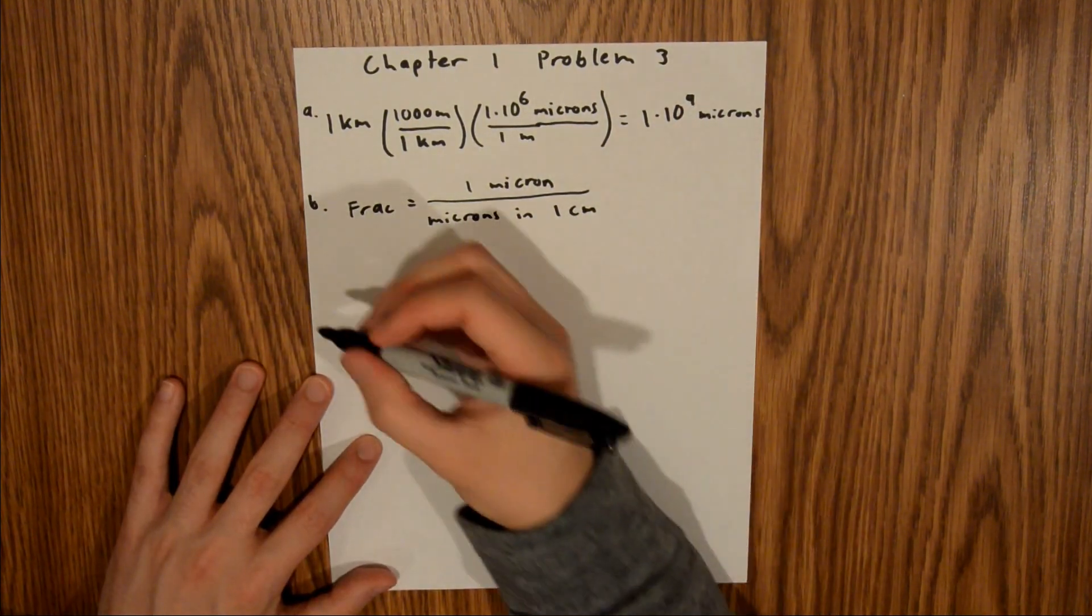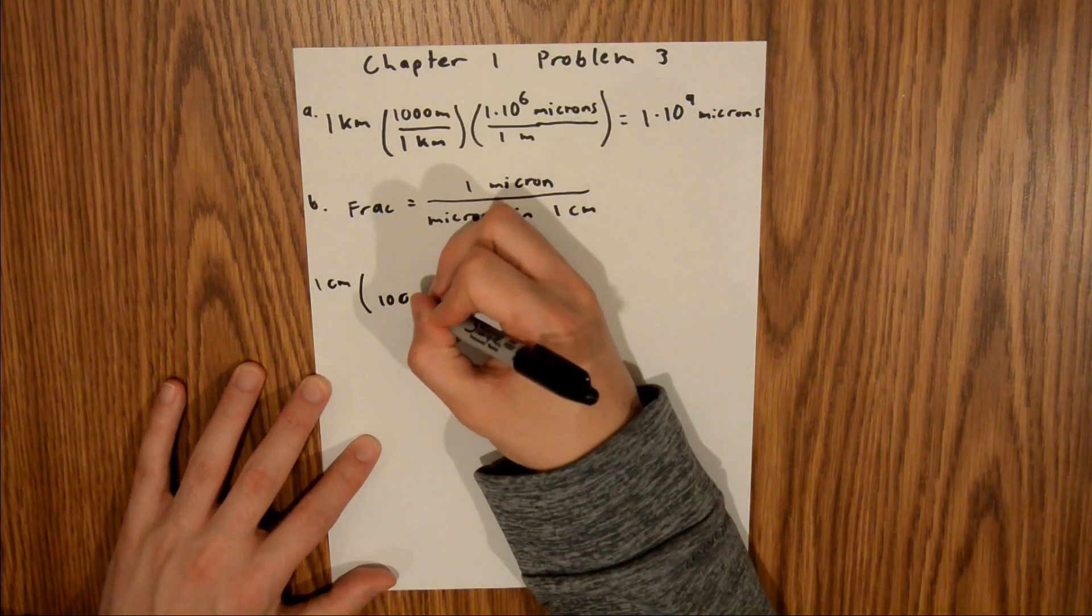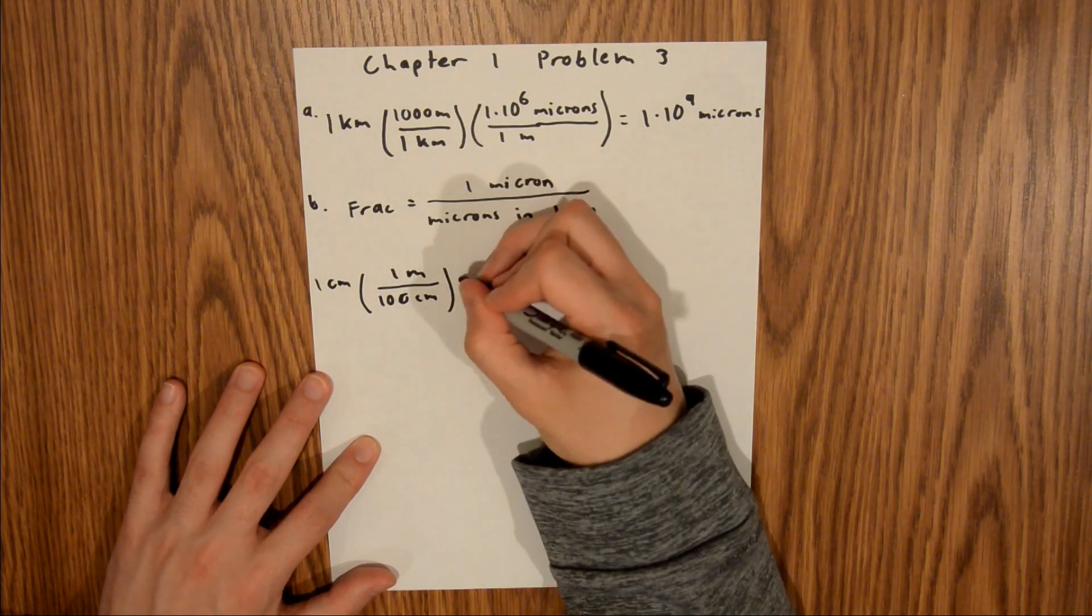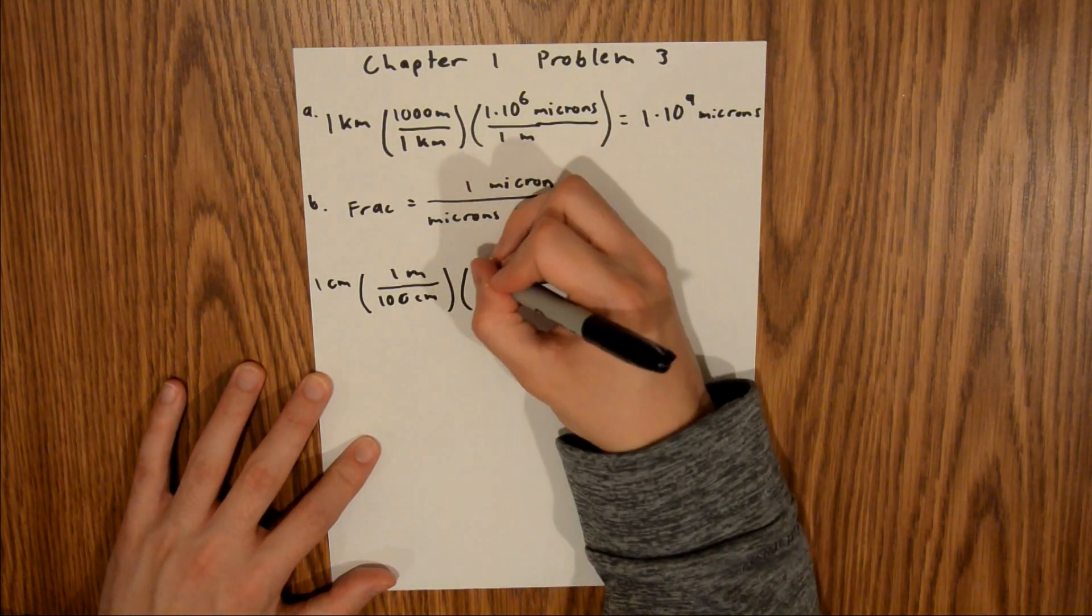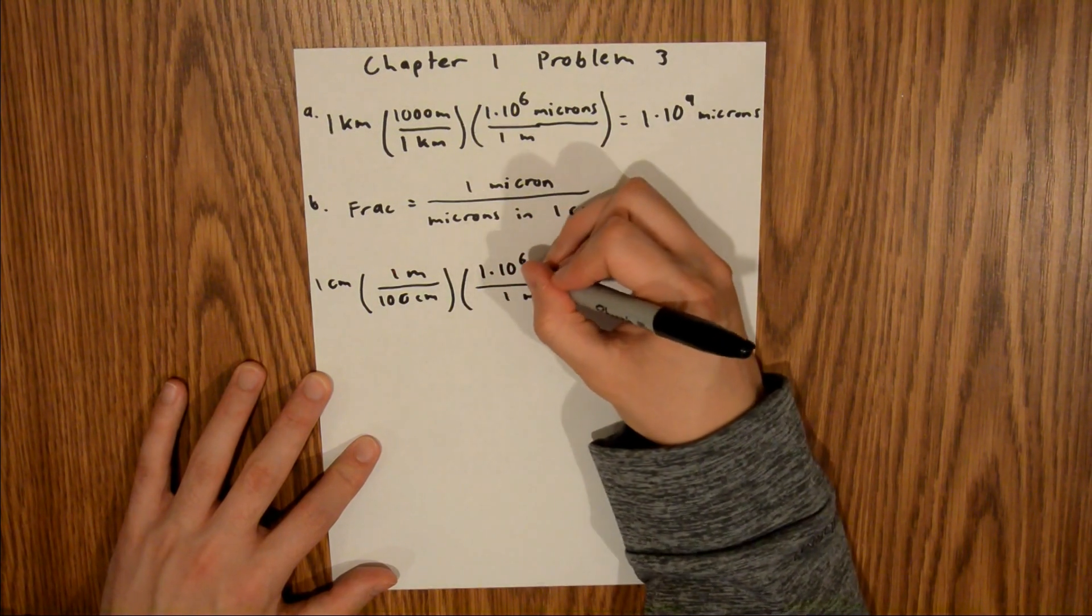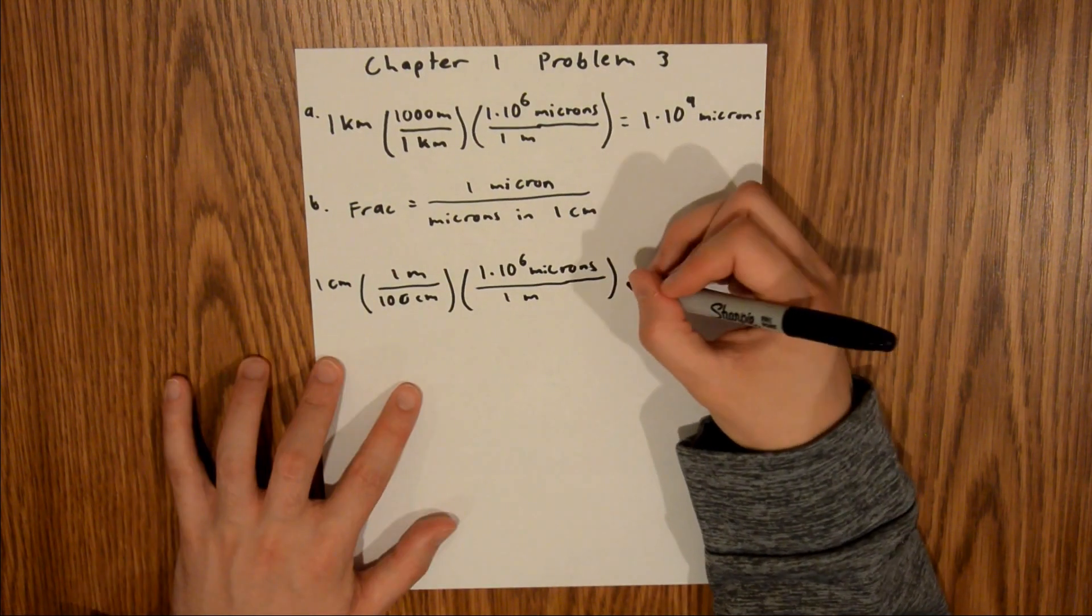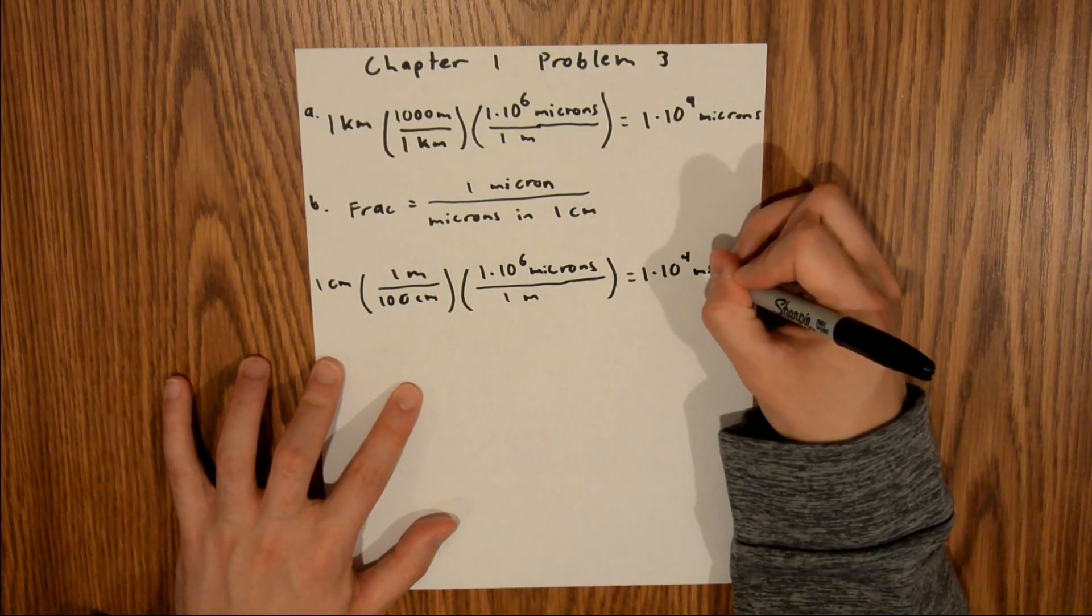So what we can do is start with 1 centimeter. We know that there's 100 centimeters in 1 meter, and then 1 meter is 1 times 10 to the sixth microns, and so that equals 1 times 10 to the fourth microns.